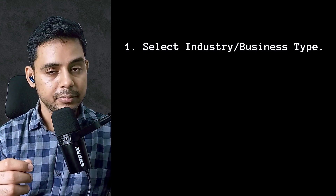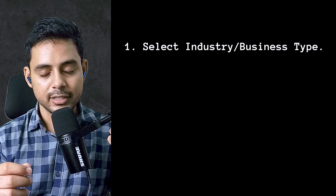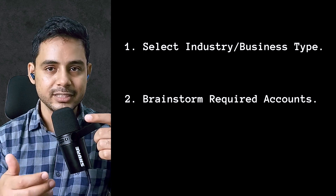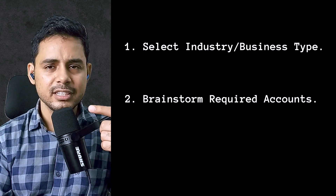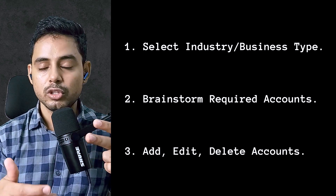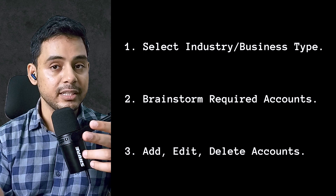As you grow your business and diversify your offerings, you may want to create new accounts for each product, service, income type, or expense. If you purchase fixed assets, you may want to create asset accounts for those as well. This is a never-ending process that you'll have to review again and again. To sum up: first, select the appropriate business or industry type; then brainstorm and list the accounts your business is going to need; finally, create those accounts and make inactive any that you don't use.